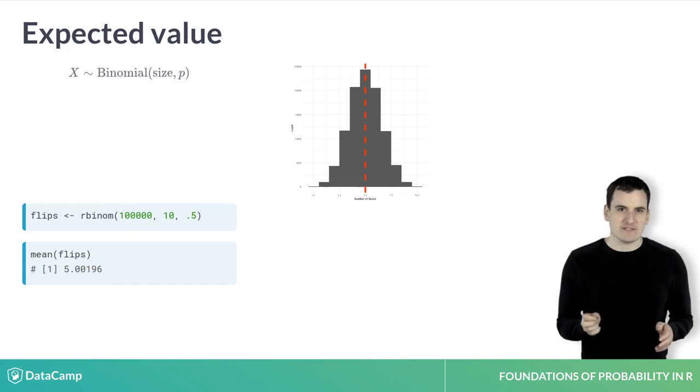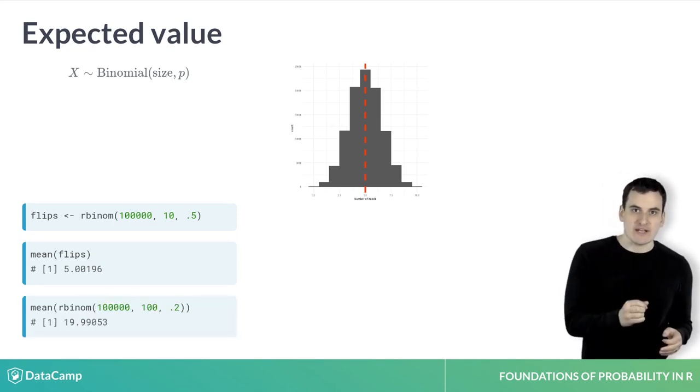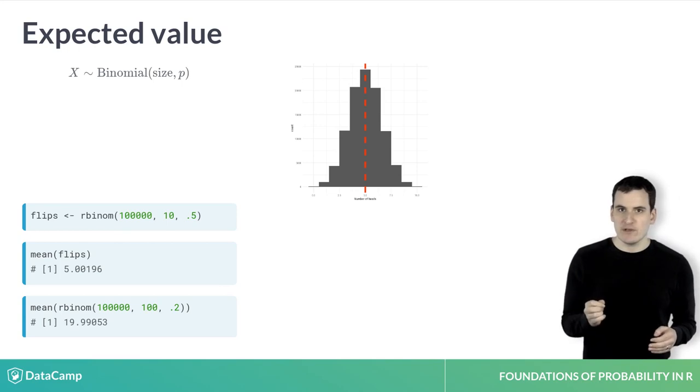We see the average is very close to 5. That's the center of the distribution if we displayed it as a histogram. If we tried sampling from a binomial with size 100 and probability 0.2, we find that the mean is very close to 20.